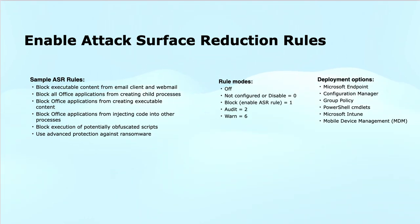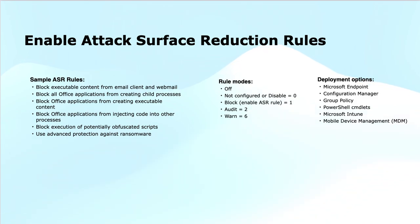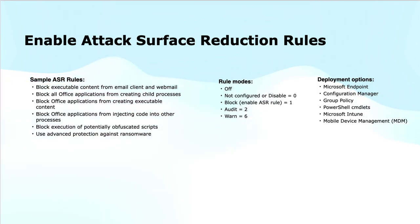Next is the rule mode. There are different rule modes: Off or not configured means the rule is inactive and provides no protection. Block means the rule is actively blocking malicious activities. Audit is a soft policy where the rule logs and monitors activities without blocking them. Warn allows the rule to warn users but does not block or take actions automatically.